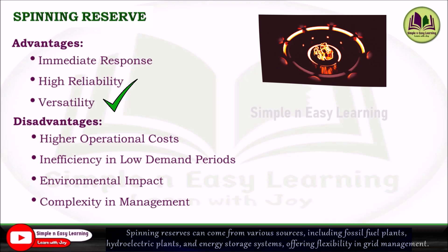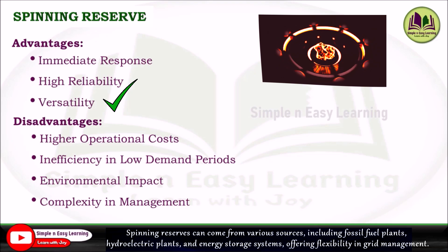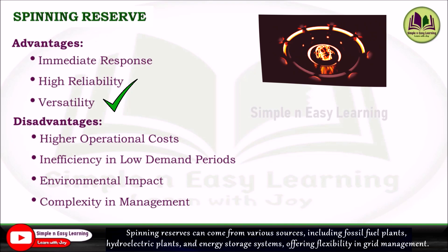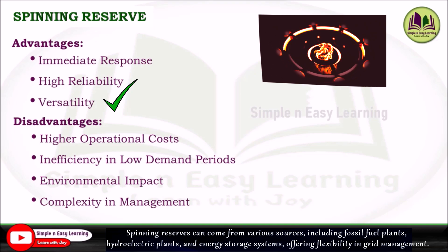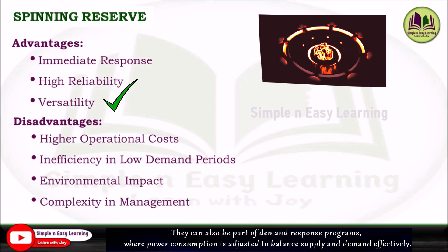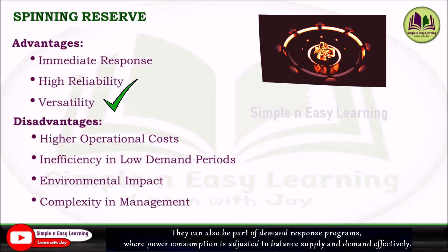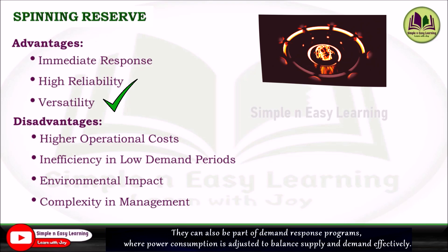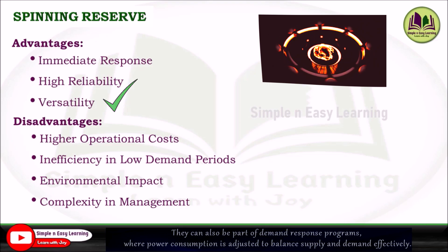The third advantage is versatility. Spinning reserves can come from various sources including fossil fuel plants, hydropower plants, and energy storage systems, offering flexibility in grid management. They can also be part of a demand response program where power consumption is adjusted to balance supply and demand effectively.